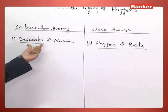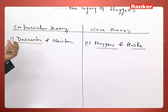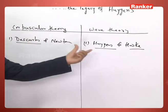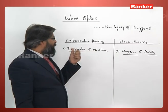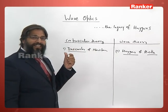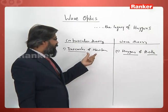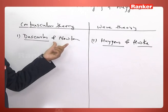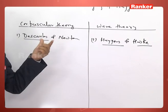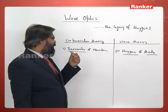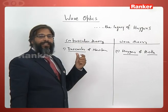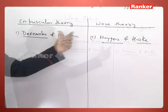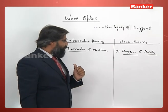Newton studied Descartes' corpuscular theory as well as Huygens' wave theory, but somehow he was inclined that since light follows rectilinear propagation, corpuscular theory is more appropriate than wave theory.